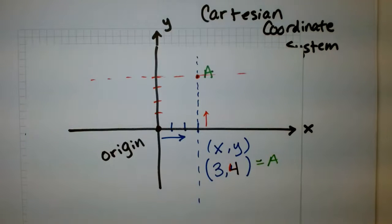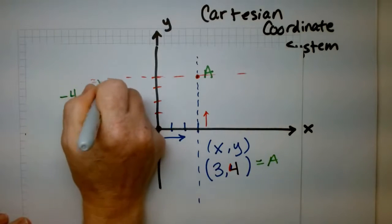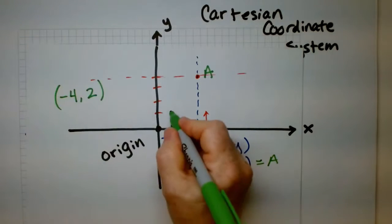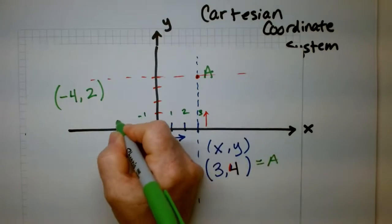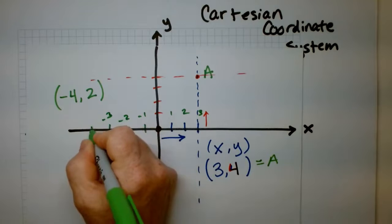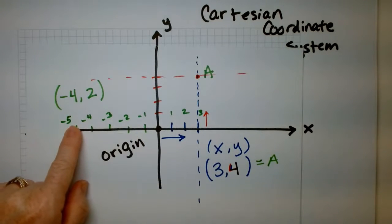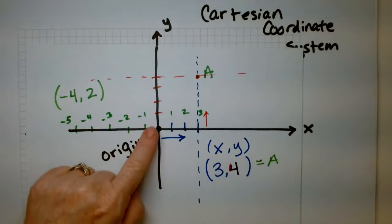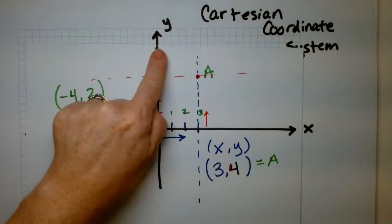Let's do a little bit more. On the same piece of paper, can you plot minus 4 comma 2? Minus 4 — what does that mean? Just as I can go plus 1, plus 2, plus 3, I can go minus 1, minus 2, minus 3, minus 4, minus 5 — as many as you want, going that way. That's on the x. And on the y, this would be minus 1, minus 2, minus 3. So always start at the origin.